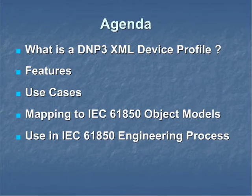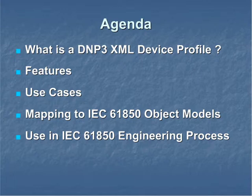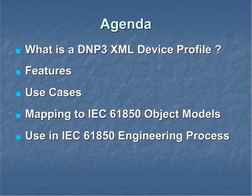In this next section, we'll take a look at self-description using XML. This functionality is defined in the interoperability section of the DNP3 specification. Topics covered in this section include what is a DNP3 XML device profile, features of the DNP3 XML device profile, use cases, mapping DNP3 to IEC-61850 object models, and the use in the IEC-61850 engineering process. First, we'll look at what is a DNP3 XML device profile and some of its features.